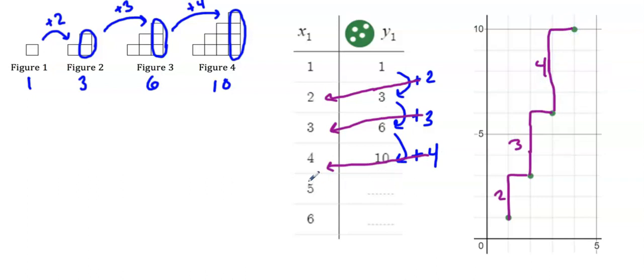If I continue the pattern to get to where x is five, I'll add five to my previous number to get 15. That would follow the same pattern. To get to my next value here where x is six, I'll need to add six, so I would have 21 if I continued my table.